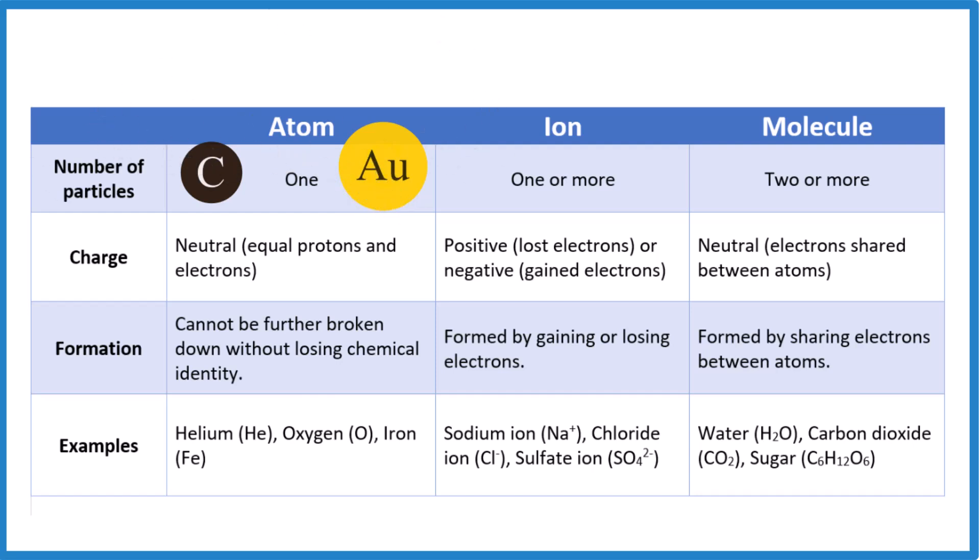For an ion, kind of similar. One or more, but they have a charge. So you see the positive sign there and the negative sign there. Those are ions. They've either gained electrons or they've lost electrons. And we can have one or more atoms together to form an ion.